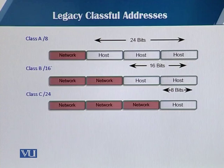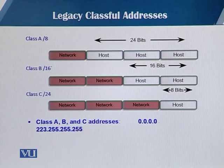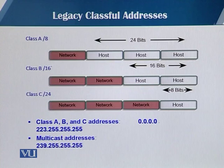Class B has 16 bits in the network portion, and Class C has 24 bits in the network portion. These are the ranges of Class A, B, and C addresses.